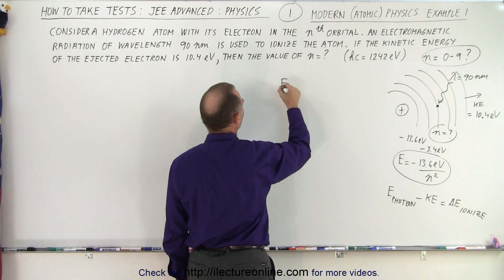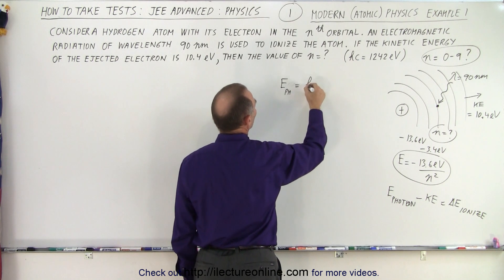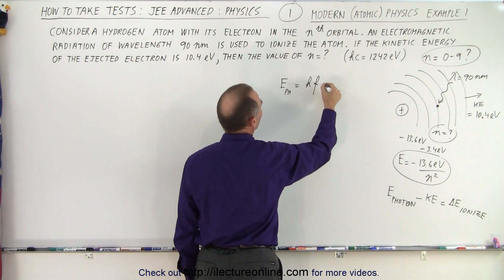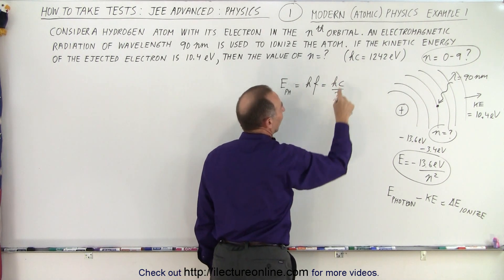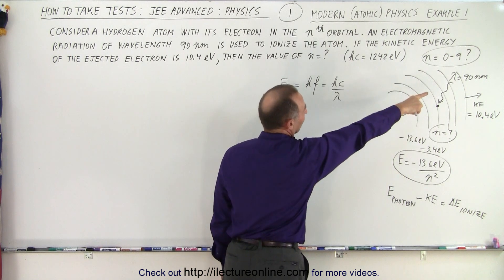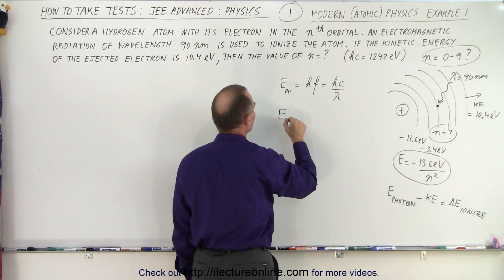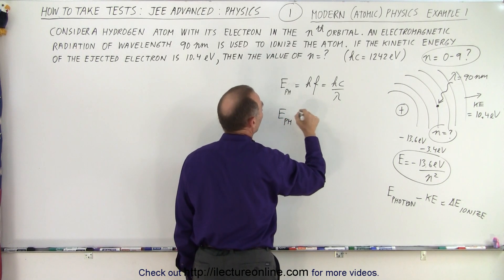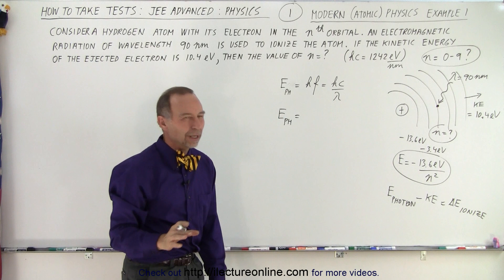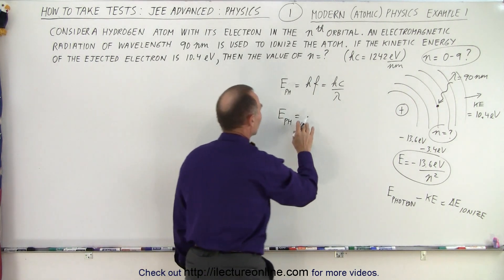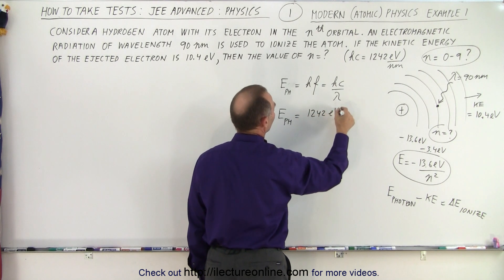Okay. Energy of the photon. Of the photon, let's just write that down, is equal to H Planck's constant times the frequency, which can be written as Hc over lambda. Since they gave us Hc, and we're given lambda, lambda is right there, we can go ahead and use that form of the equation. So the energy of the photon is equal to, oh wait, I'm missing something. It's per nanometer. That's right. They gave it as electron volts per nanometer.